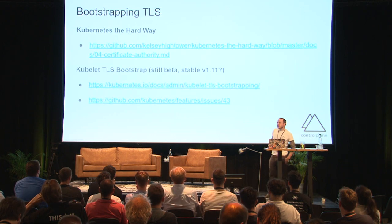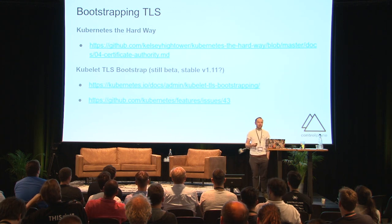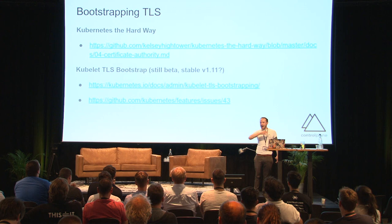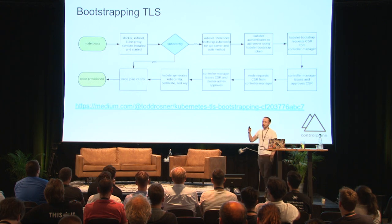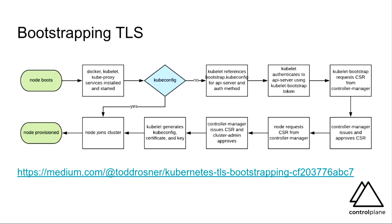Bootstrapping TLS saves us from baking certificates into our base images when we run an immutable infrastructure-style Kubernetes cluster and want to autoscale. This means we can check for the presence of a kubeconfig — if one is not there, we can generate a CSR, a certificate signing request, send it back to the API server which is at least TLS, so we know the API server's identity. The CSR includes our identifying information — IP or DNS based — and that is signed by the API server and returned to us. We've now bootstrapped our authentication and can dynamically add nodes to a Kubernetes cluster.